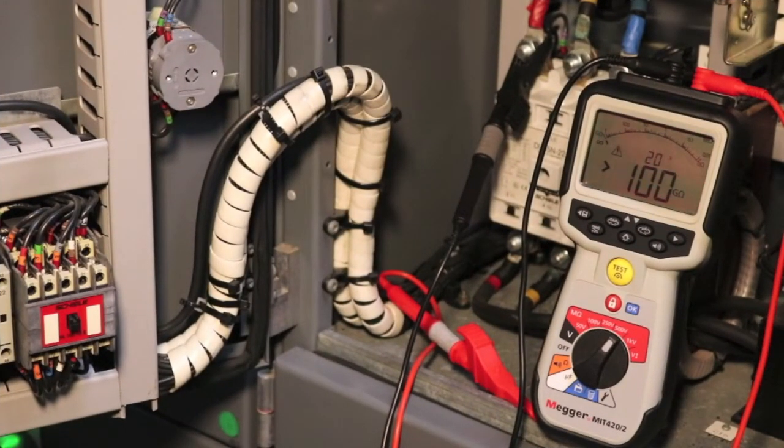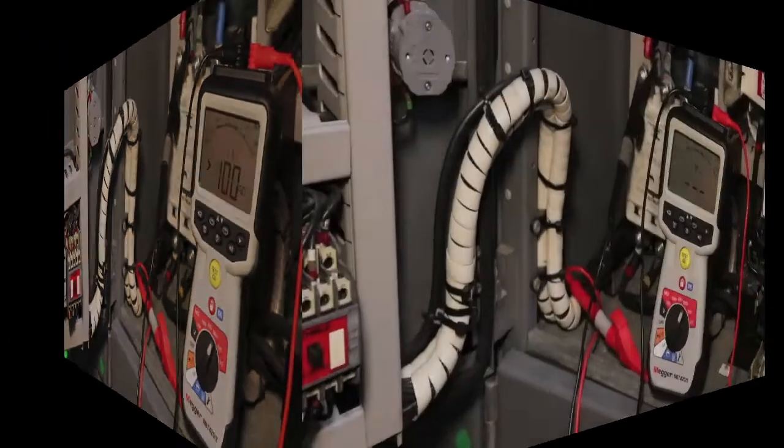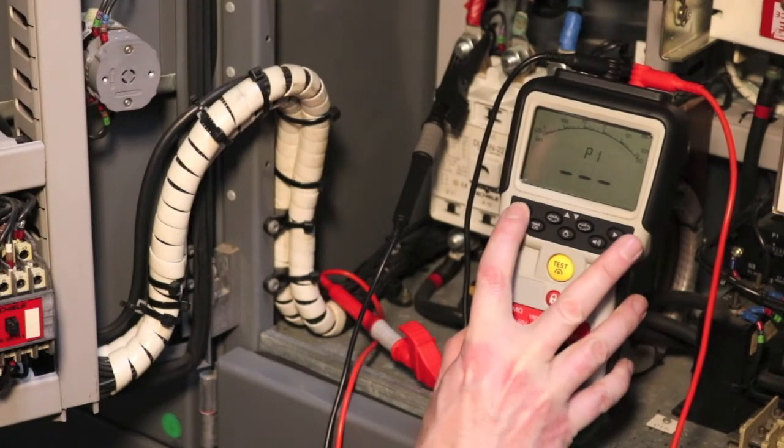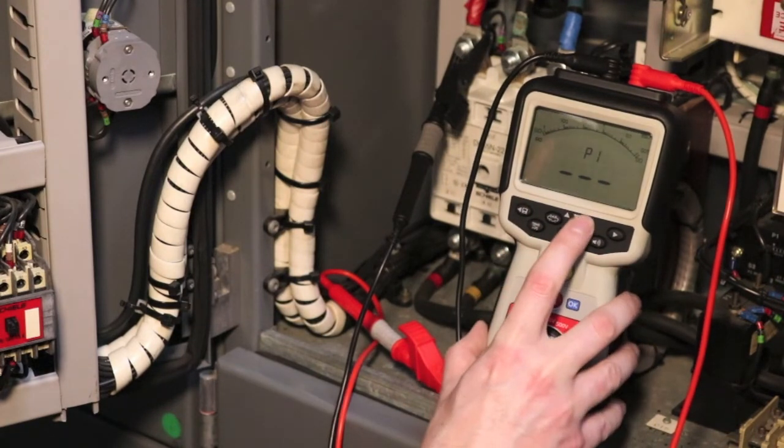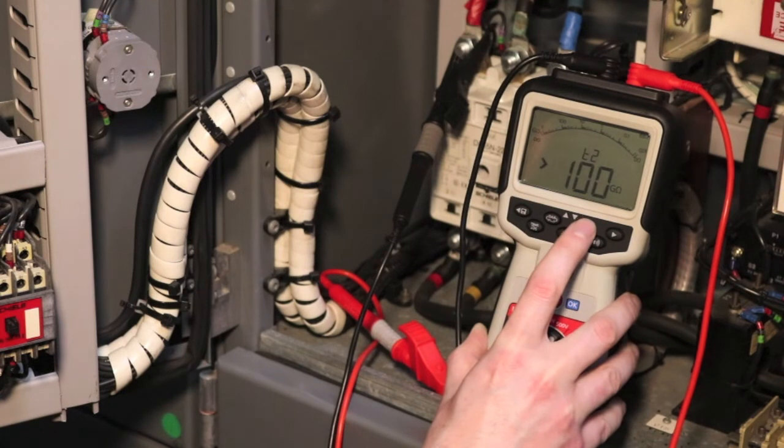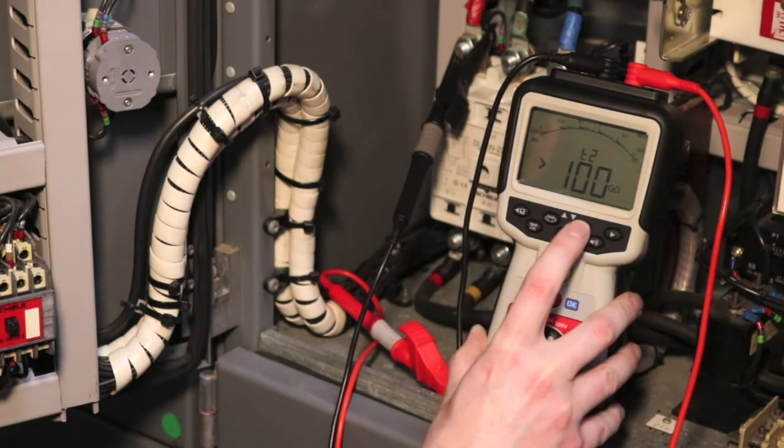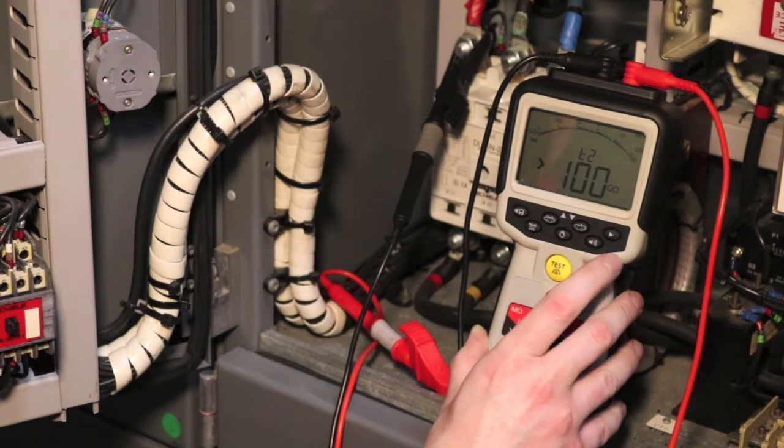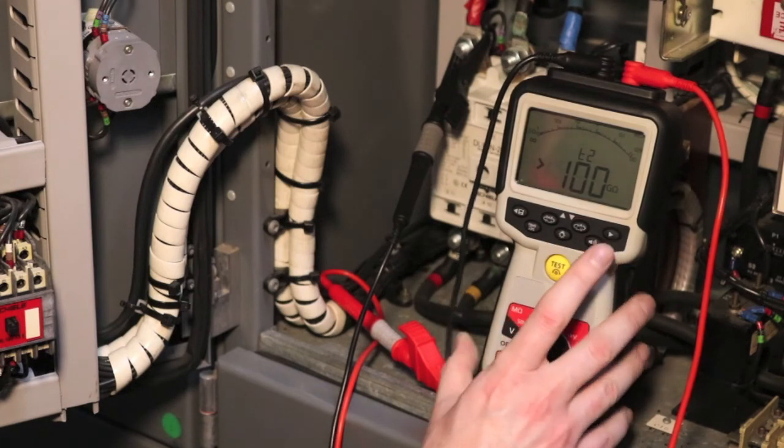So coming up towards the end of the test now you can see the meter has actually reached the maximum reading of 100 gig ohms for the 500 volt range. At the end of the test there's no actual PI ratio value being recorded. You can scroll through readings to get the one minute values and the 10 minute values but presumably because it's gone over that 100 gig ohm max reading for the range there is no PI ratio recorded.